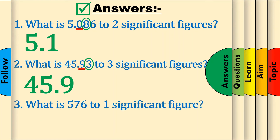Question 3: What is 576 to 1 significant figure? Using our method, you'd have first stuck a decimal point on the end because it doesn't have one. Next, underline 5 as the first significant figure and circle the 7 next to it. Since 7 is 5 or more, add 1 to 5 to get 6. Get rid of everything after the underlined number, which leaves us with 2 gaps. Fill them up with zeros to get the final answer of 600.